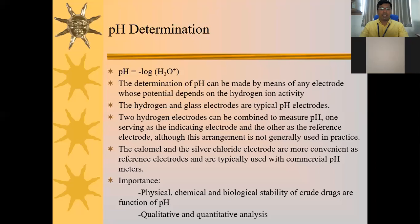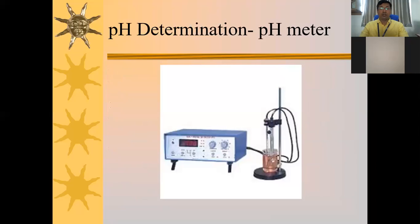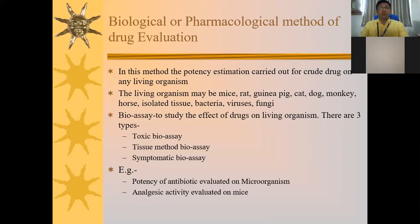Swelling index is defined as the volume in milliliters occupied by one gram of the drug, including any adhering mucilage, after it has swollen in an aqueous liquid for four hours. Foaming index is also determined for crude drugs — for example, reetha (soapnut) is a classic example. Astringency and tannin content are determined for tannin drugs like catechu and galls.